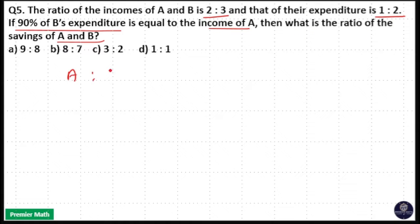Here we have A and B. Their income is in the ratio 2:3 and their expenditure is in the ratio 1:2. 90% of B's expenditure... I will take 2x and 3x as income and 1y and 2y as expenditure.